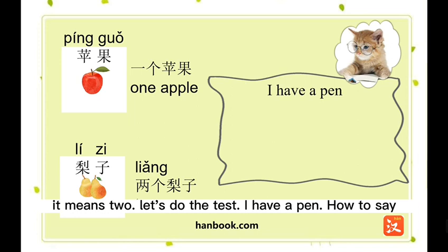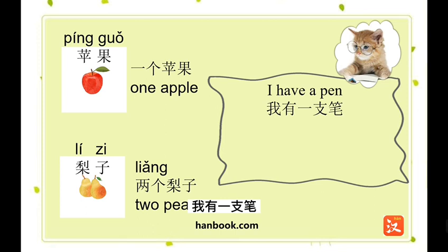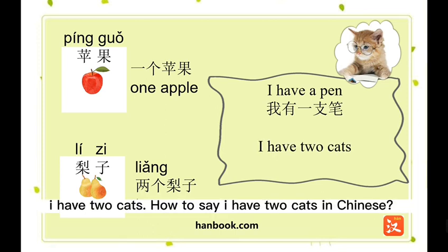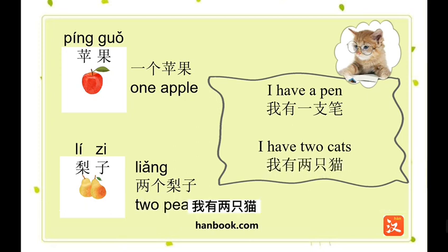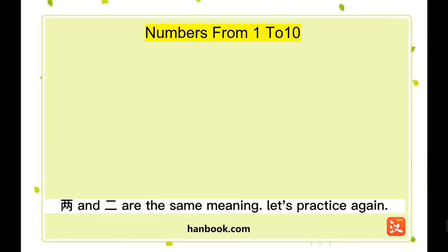Let's do a test. I have a pen — how to say that in Chinese? 我有一只笔。 I have two cats — how to say that in Chinese? 我有两只猫。 Remember: 两 is equal to 二, they both mean two.